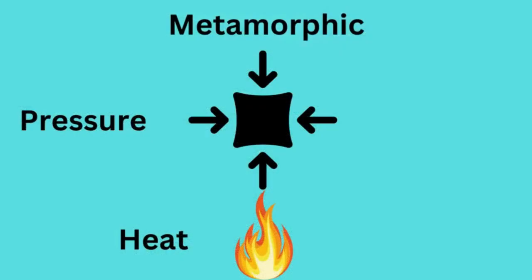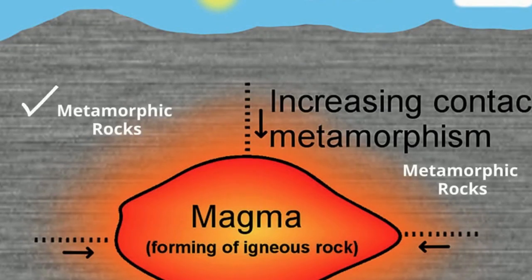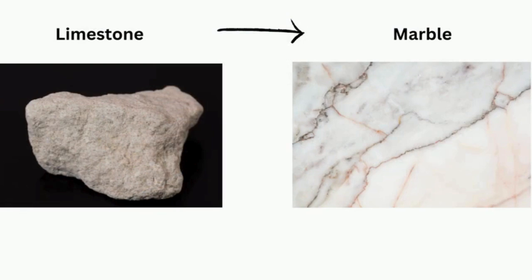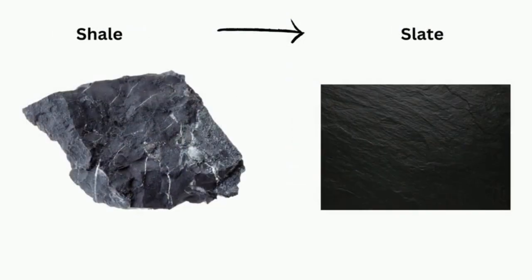Metamorphic rocks are formed when existing rocks are subjected to high temperature and pressure. The temperature isn't hot enough to melt the rock completely into a liquid, but hot enough, along with the pressure, to create new rocks. Marble is a metamorphic rock created from limestone, and slate comes from shale or mud rock.